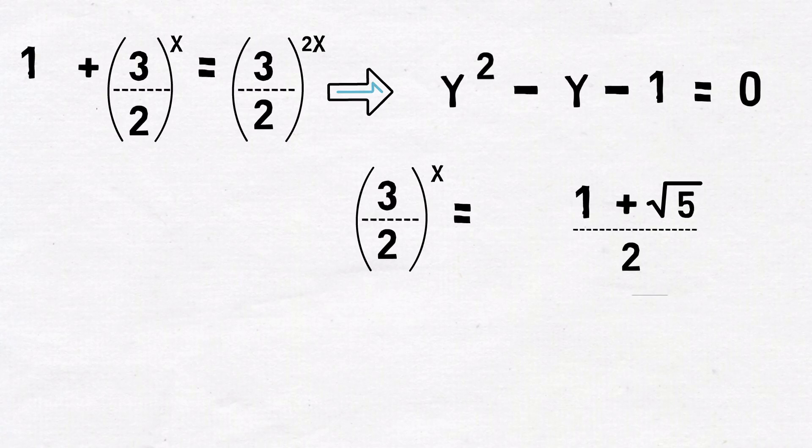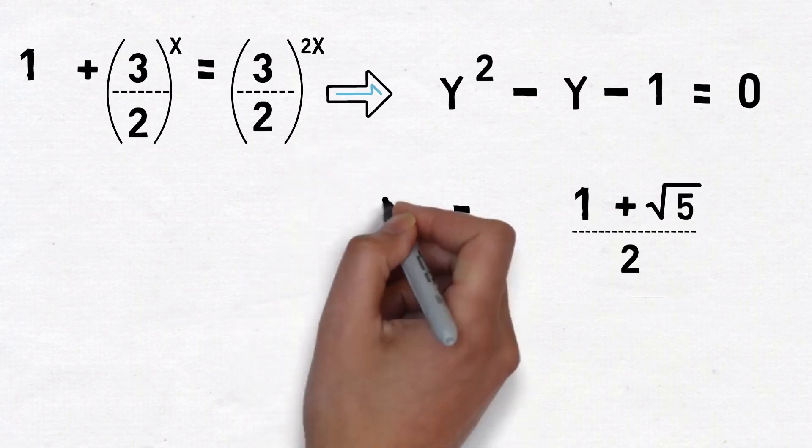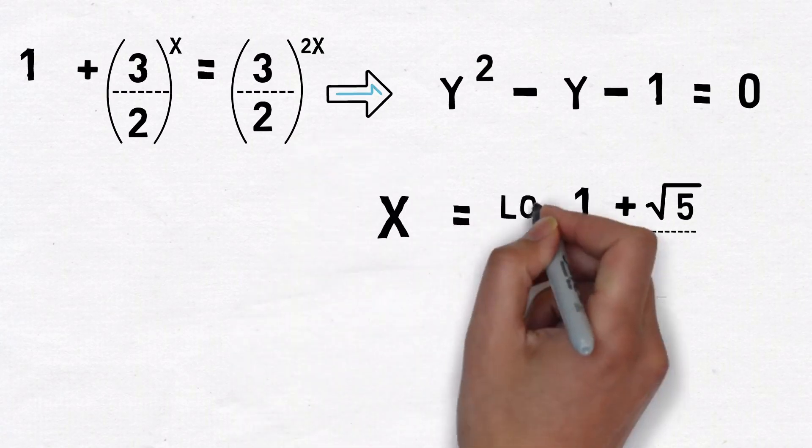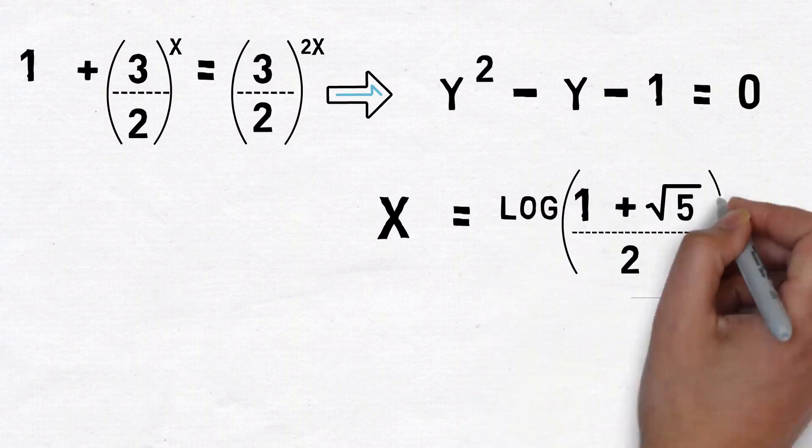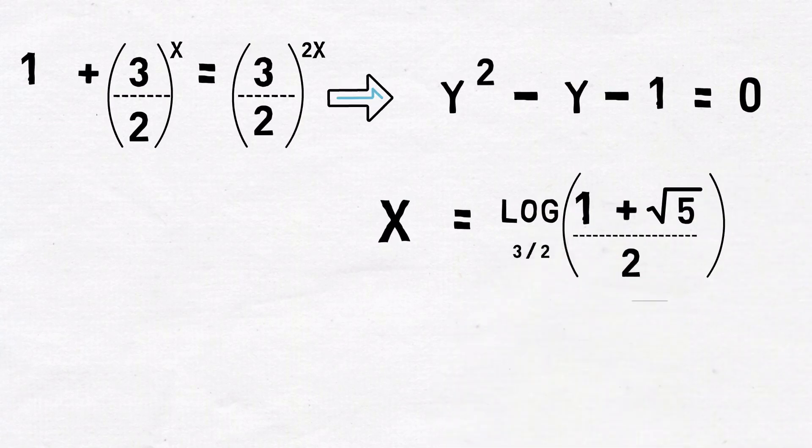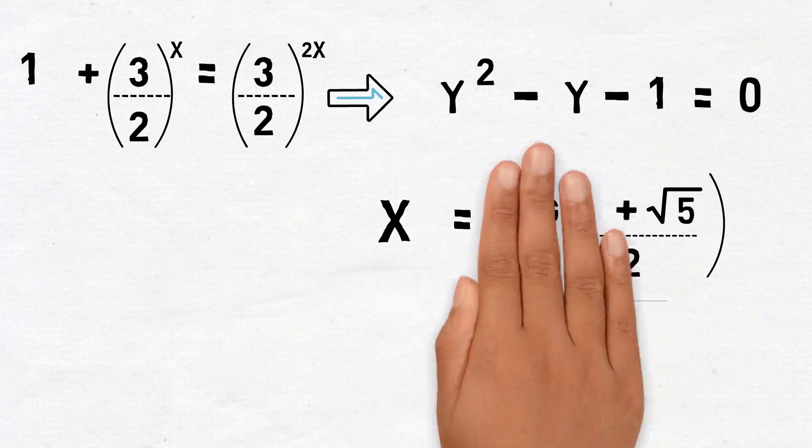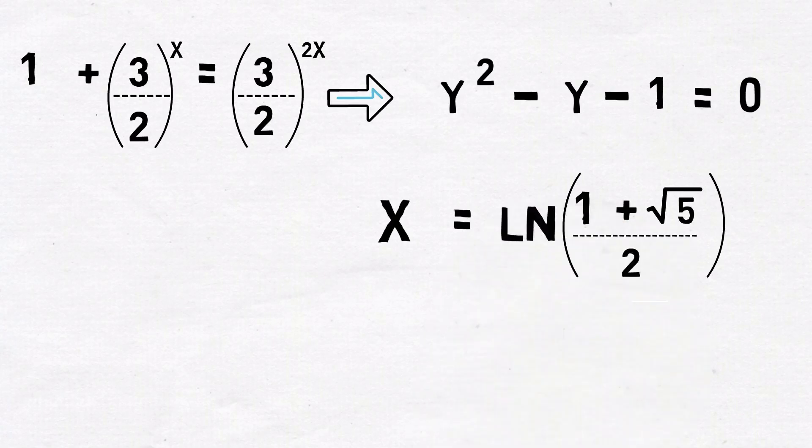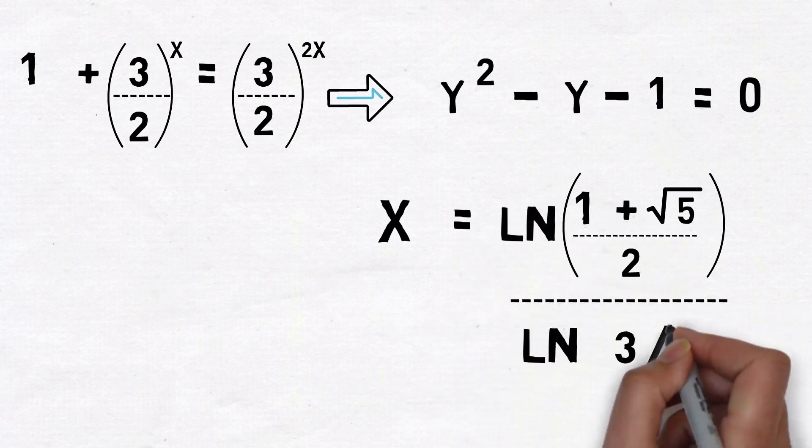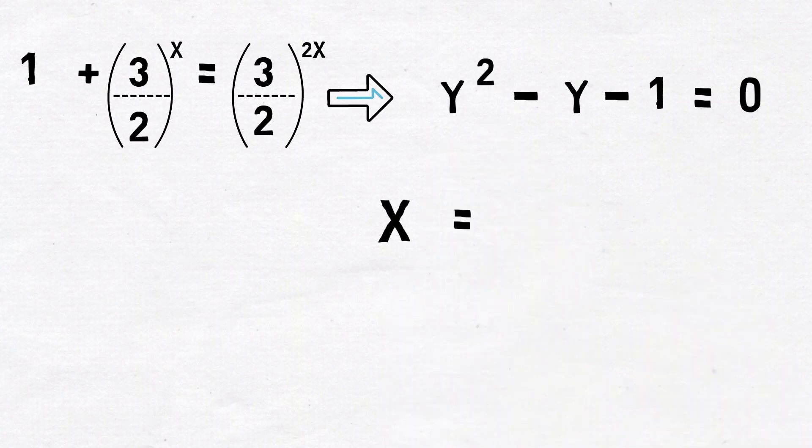Now this can be solved using logarithms. So using logarithms to solve for x, we get x is equal to log of 1 plus square root of 5 by 2 to the base 1.5. Now converting this to natural logarithms, this can be written like so. And using a calculator to solve this, the approximate answer is 1.19.